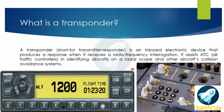Here you see a picture of a transponder. This is a type C transponder which you will find in many smaller aircraft. On the right-hand side, this image shows a type S or Sierra type transponder which you'll find in all commercial airplanes.